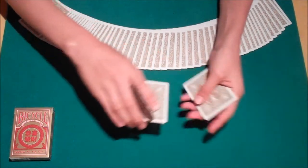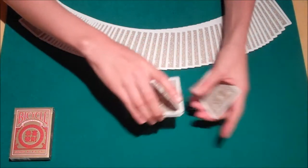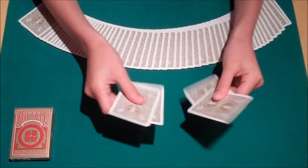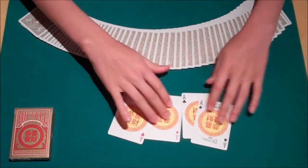So here we have 1, 2, 3, 4, 5, 6, 7, 8 cards. But really we only have 4 and they are of course 4 aces.